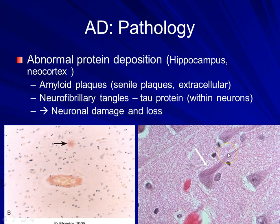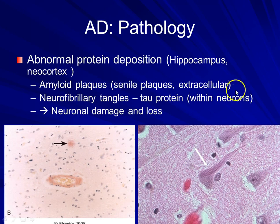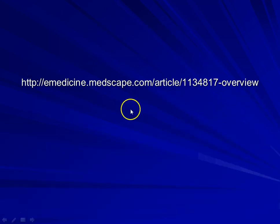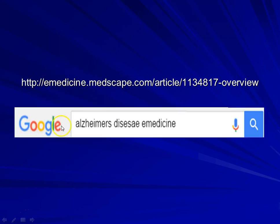It is not really entirely certain whether the neurofibrillary tangles themselves are causative events in Alzheimer's disease, but it is more generally accepted that the amyloid plaques are a very important predisposition to the development of the disease. There is resulting neuronal damage and neuronal loss. So if you want to look up more on the pathophysiology of Alzheimer's disease, e-medicine is an excellent reference — all you have to do is Google it.